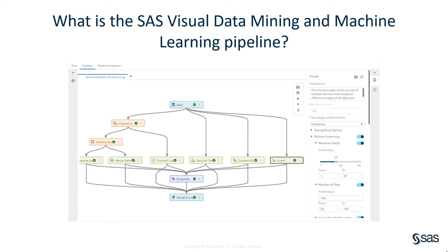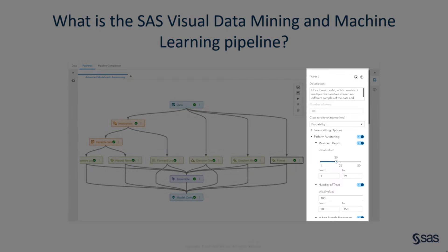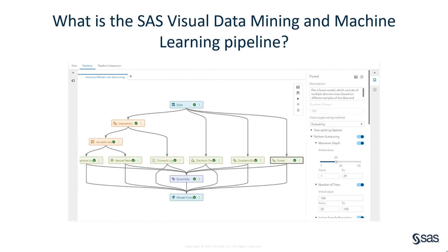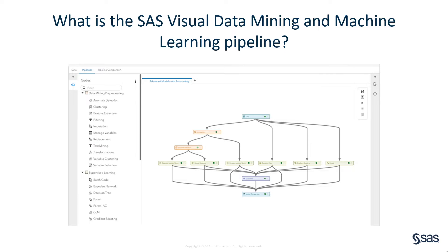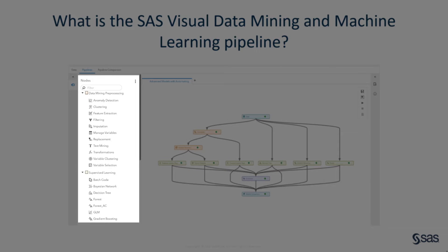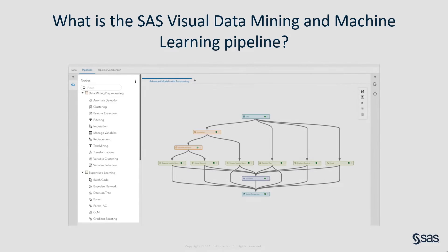Each node within the pipeline has a corresponding set of properties that can be tuned for your individual needs. Here you see the properties associated with the forest node in the right-hand panel. In addition, if you expand the panel on the left, you see a very comprehensive suite of nodes available within SAS Visual Data Mining and Machine Learning for pre-processing your data, supervised learning, and more.